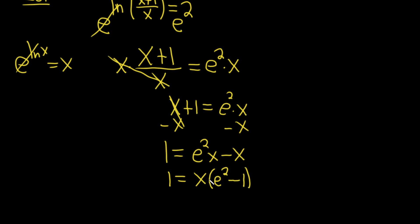This is being multiplied by e squared minus 1. So to solve for x, we'll simply divide both sides by e squared minus 1. So these cancel. So we're left with x equals 1 over e squared minus 1. This would be the solution to this equation.